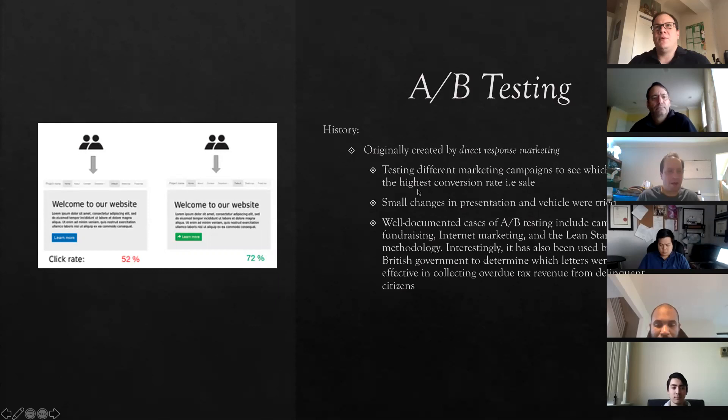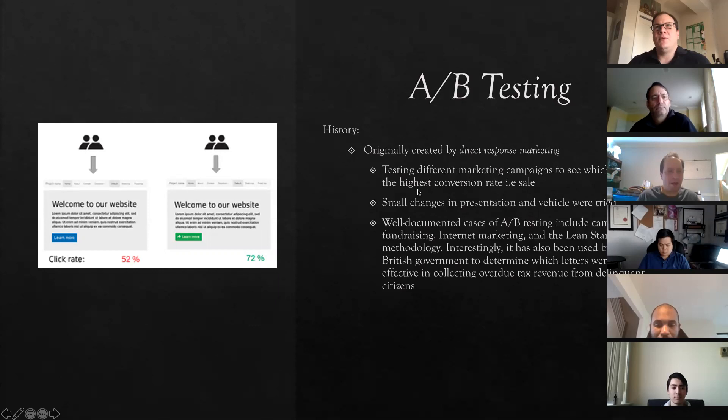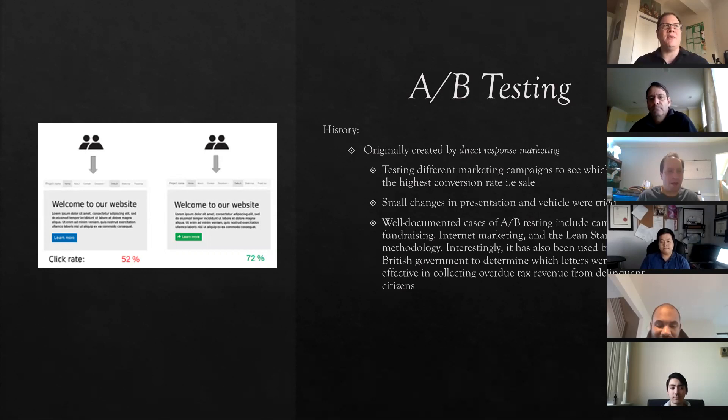One way to get direct feedback and more information about your products is to build it into the release or development process itself. This still falls under the second way. There are some approaches to design that can help you figure out whether or not you're meeting your business's objectives, and A/B testing is one of those things.